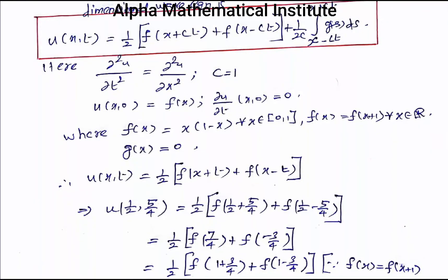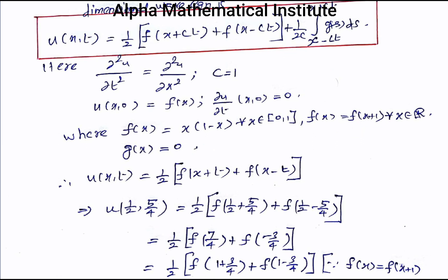Our given equation is ∂²u/∂t² = ∂²u/∂x². Comparing with the general wave equation, we get c = 1. The initial conditions give f(x) = x(1 − x) and g(x) = 0.